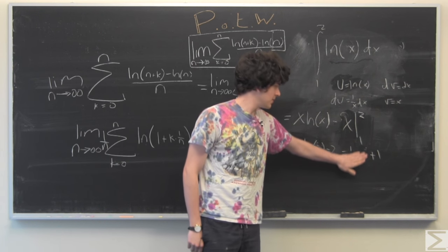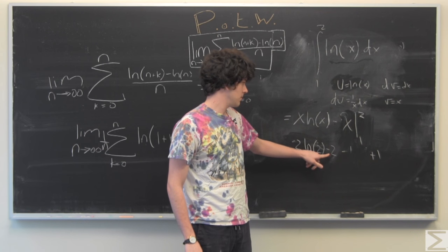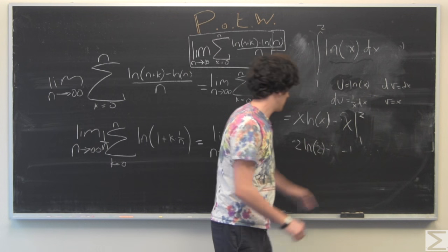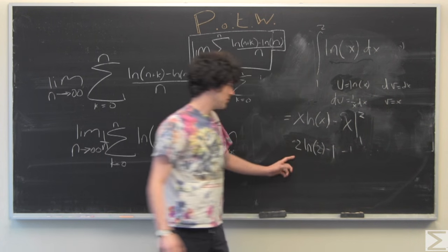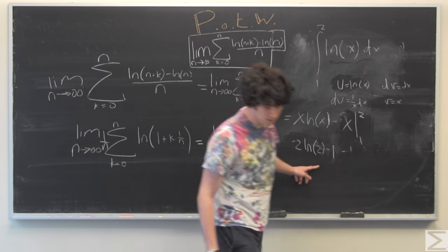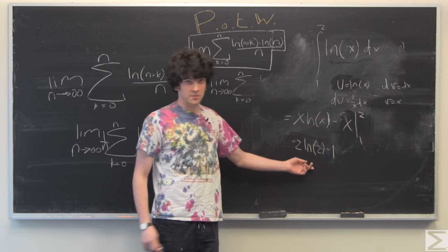And ln of 1 of course is 0. And so this is just going to become 2 ln of 2 minus 1.